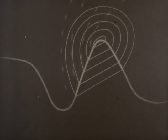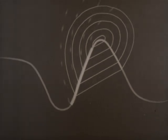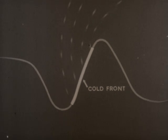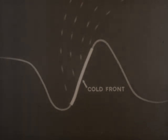And acquires a component of motion toward this boundary. The boundary is called a cold front, the term being defined as a boundary along which cold air is advancing.